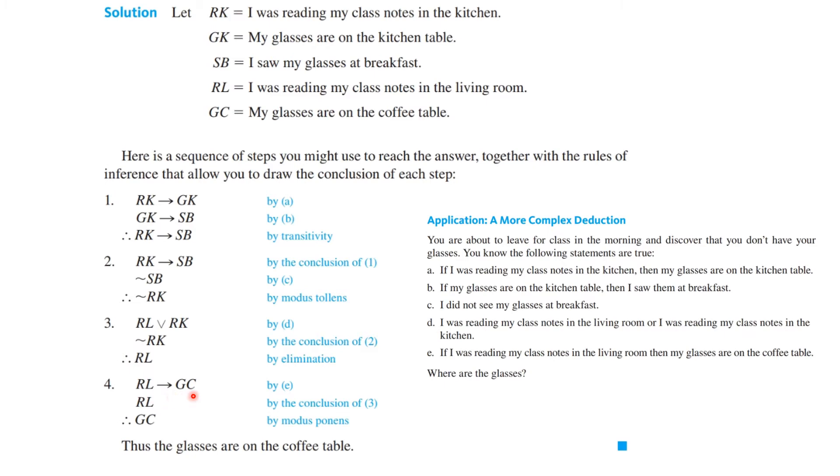So now RL implies GC. That was by E. Excuse me. I did not see my glasses. Okay, so that is RL. That's by E. And so that means, and I know that RL is true by the conclusion of 3. So that means this is modus ponens. So therefore the glasses are on the coffee table. Now this is much more complicated, and this is similar to the proofs that we are going to be doing later. So do pay attention to this and realize there will be a lot of this kind of thing in the course.